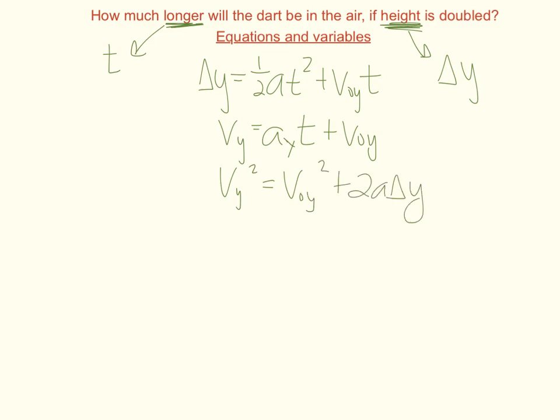So whenever you're doing proportional reasoning with equations and variables, you need to pick an equation that relates those variables you're wondering about. So time and height. Looking at these three equations, if it's time, this equation's out that doesn't have time in it. Height's not in this one, so this is the equation we're going to use. You always want to pick an equation that has both variables in it.